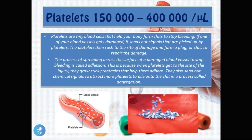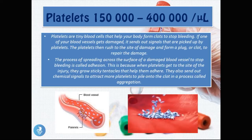Now we move on to platelets, also called thrombocytes. Their normal value is between 150,000 to 400,000 per microliter. Platelets are tiny blood cells that help your body form clots to stop bleeding. When a blood vessel is damaged it sends out signals picked up by platelets, which rush to the site and form a plug to repair the damage. The process of spreading across the surface of a damaged vessel is called adhesion.